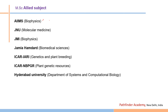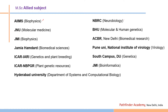Allied subject options include Biophysics from AIIMS, Molecular Medicine from JNU, Biophysics from Jamia Millia Islamia, Biomedical Sciences from Jamia Hamdard, Genetics and Plant Breeding from ICAR, Plant Genetic Resources from ICAR, System and Computational Biology from Hyderabad University, Neurobiology from NBRC, Molecular and Human Genetics from BHU, Biomedical Research from ACBR New Delhi, Virology from the National Institute of Virology, Genetics from South Campus Delhi University, and Bioinformatics from Jamia Millia Islamia. MSc programs from these institutions are equally good.